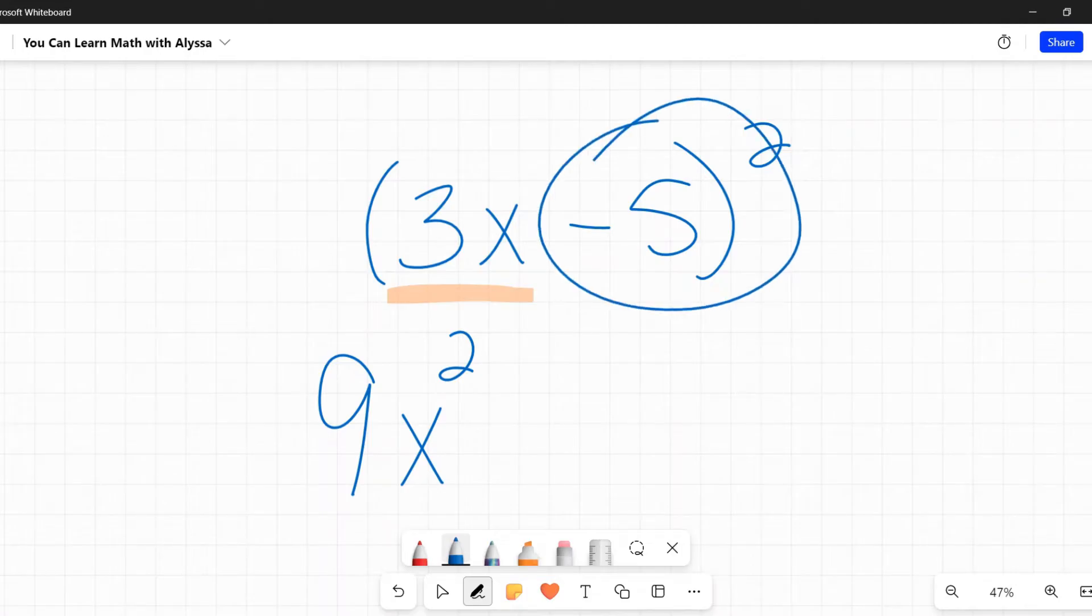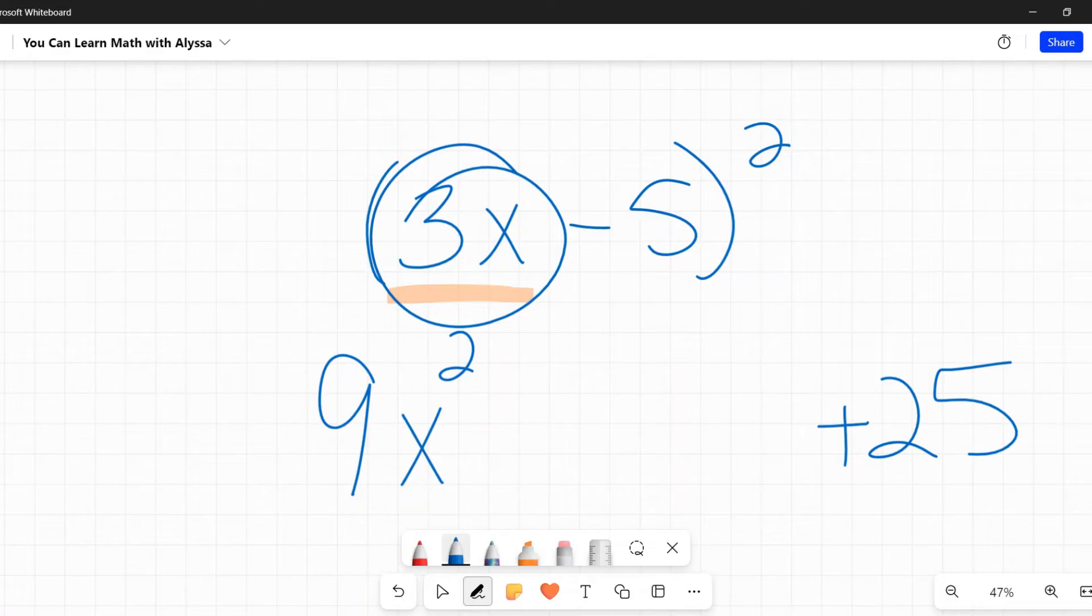I'm going to do my last term because that's pretty easy. Negative 5 squared is negative 5 times negative 5, which becomes a positive 25. In a perfect square, this is always going to be positive. Then for our middle term, it is 2 times A times B. 2 times 3x times negative 5. That negative sticks with that B. 2 times 3x is 6x. 6x times negative 5 is negative 30x. And there I followed my pattern and I have my answer.